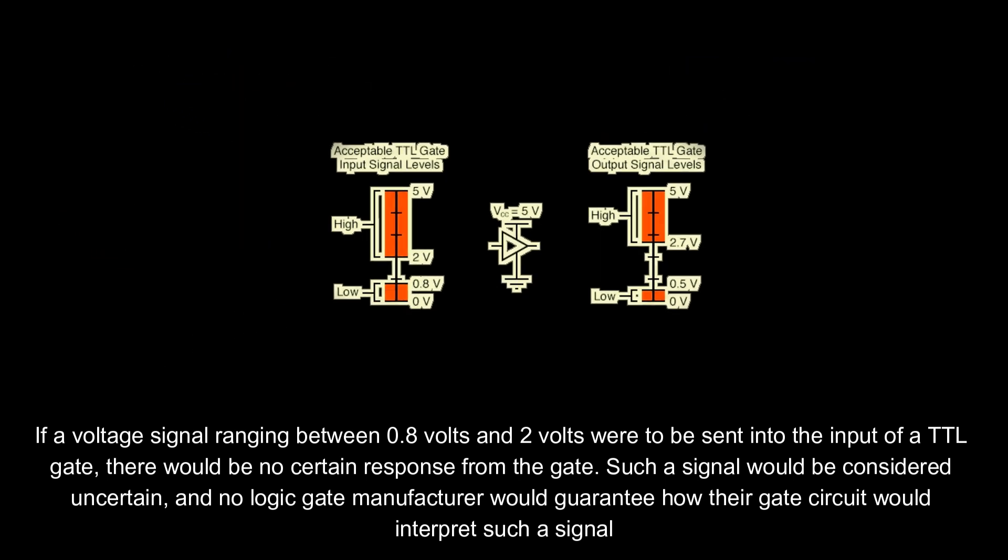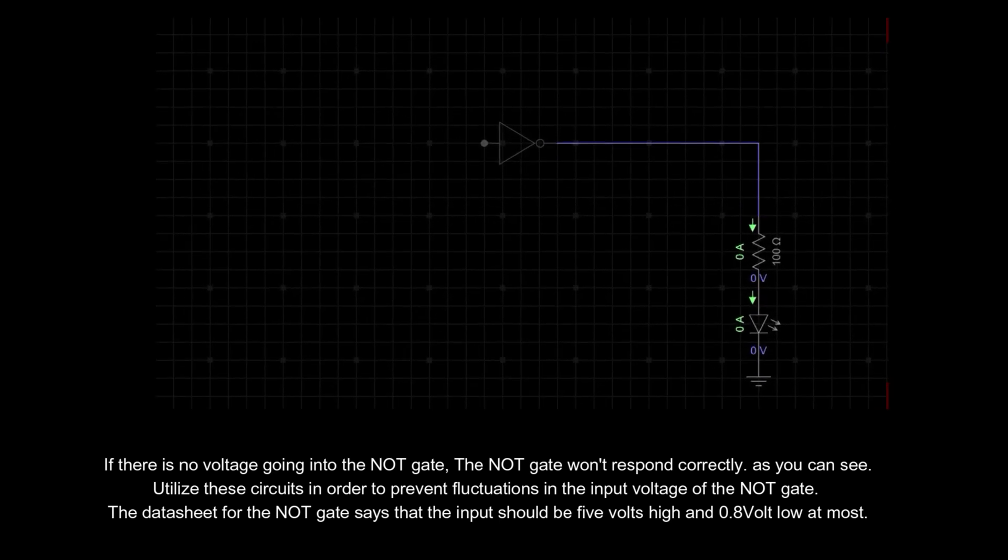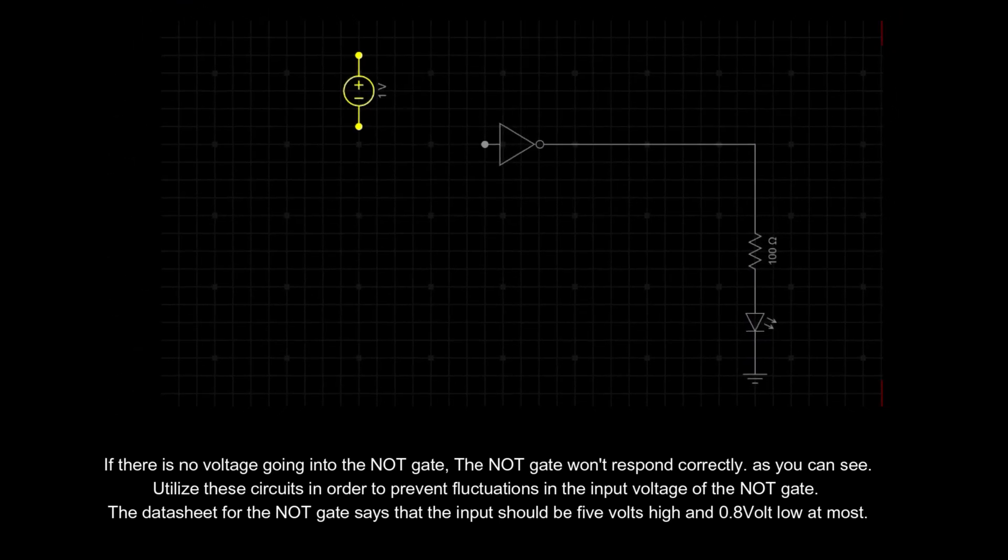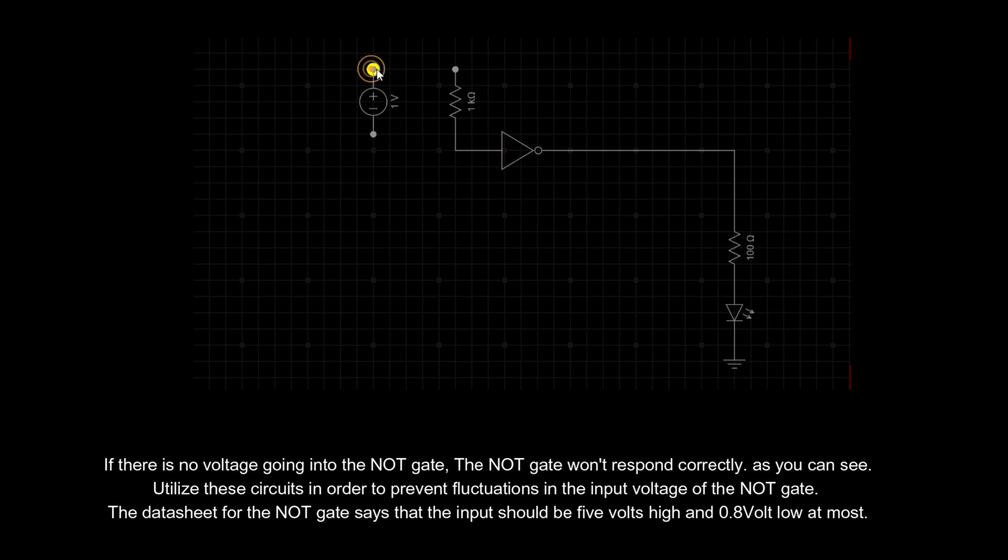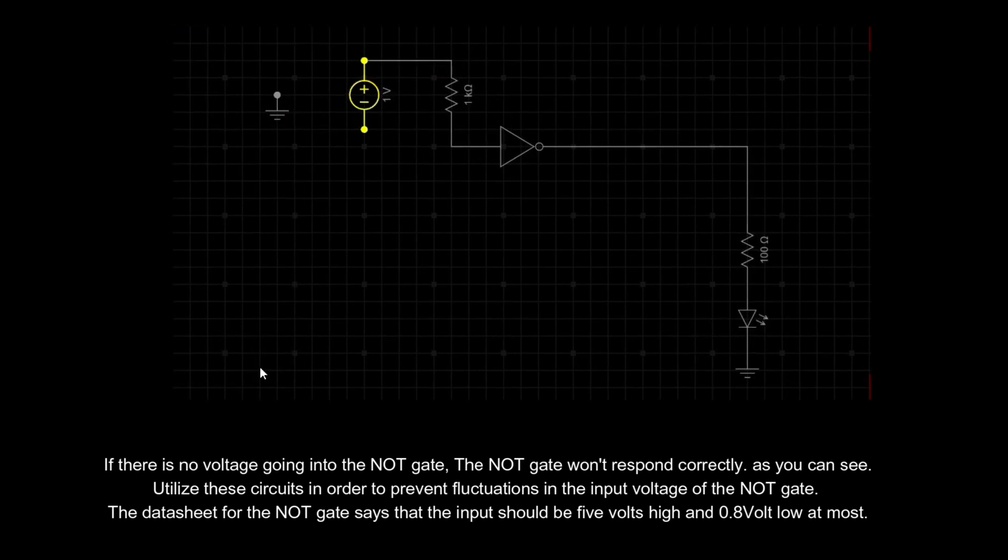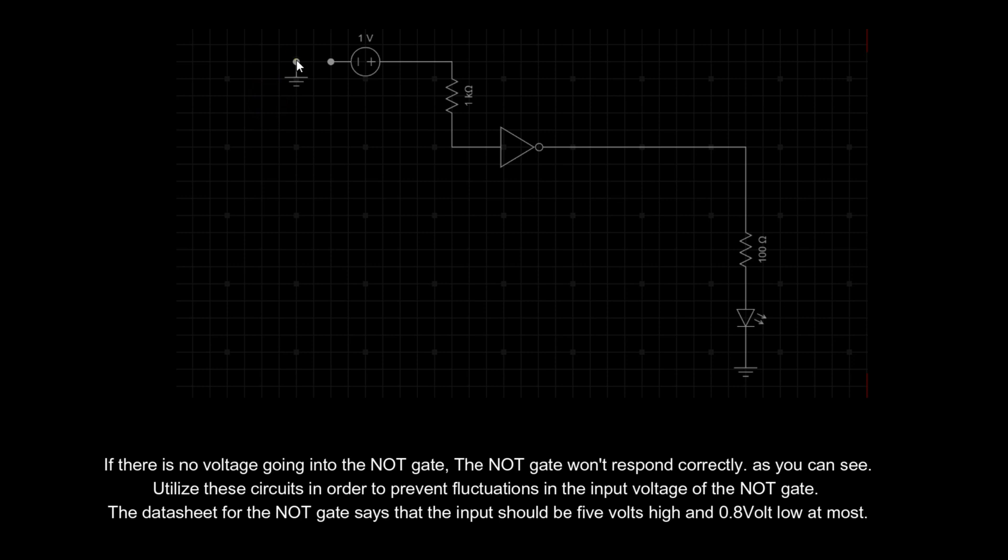If there is no voltage going into the NOT gate, the NOT gate won't respond correctly. As you can see, utilize these circuits in order to prevent fluctuations in the input voltage of the NOT gate. The datasheet for the NOT gate says that the input should be 5 volts high and 0.8 volt low at most.